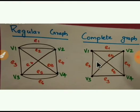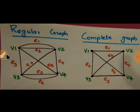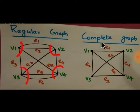Next we consider what is a regular graph and a complete graph. A regular graph is a graph in which all the vertices have the same number of edges. The number of edges attached to a vertex is called degree, so in a regular graph all vertices have the same degree. In the figure, V1 has degree 4, V2 has degree 4, V3 has degree 4, and V4 has degree 4 — all vertices have the same degree. Such a graph is called a regular graph.